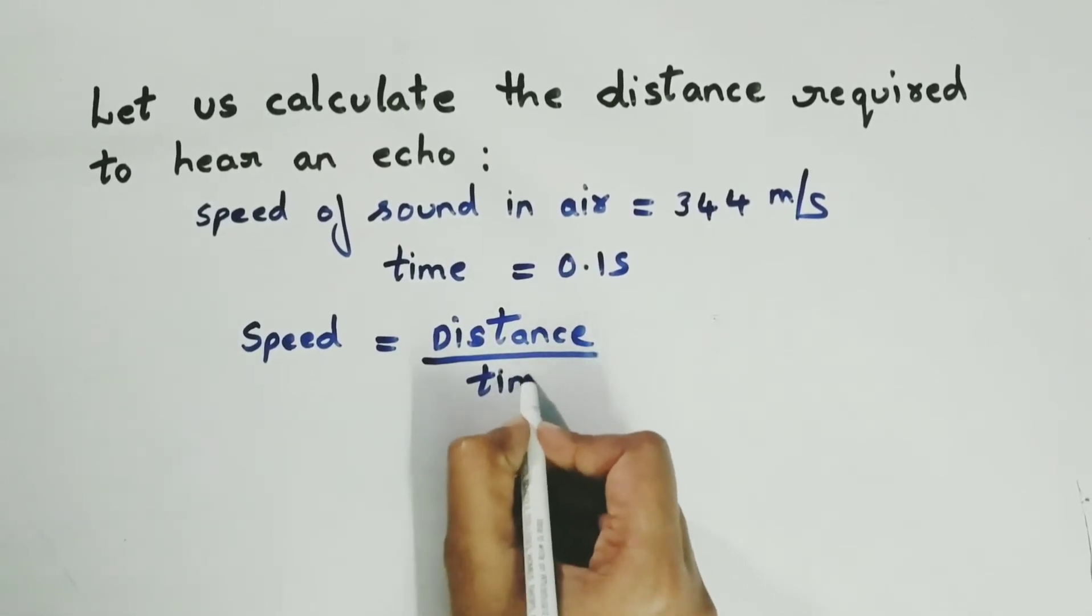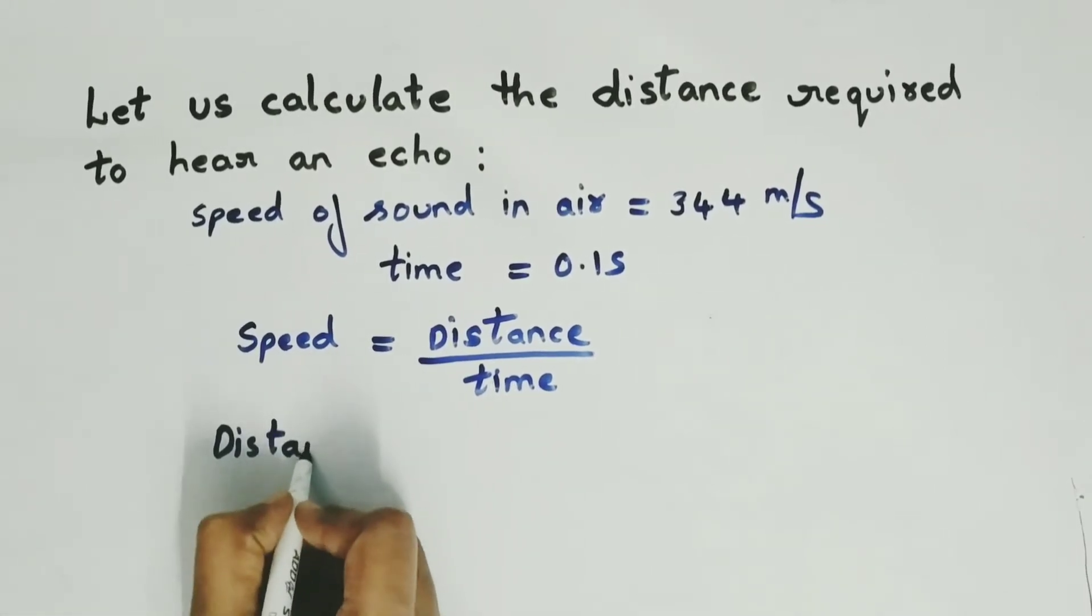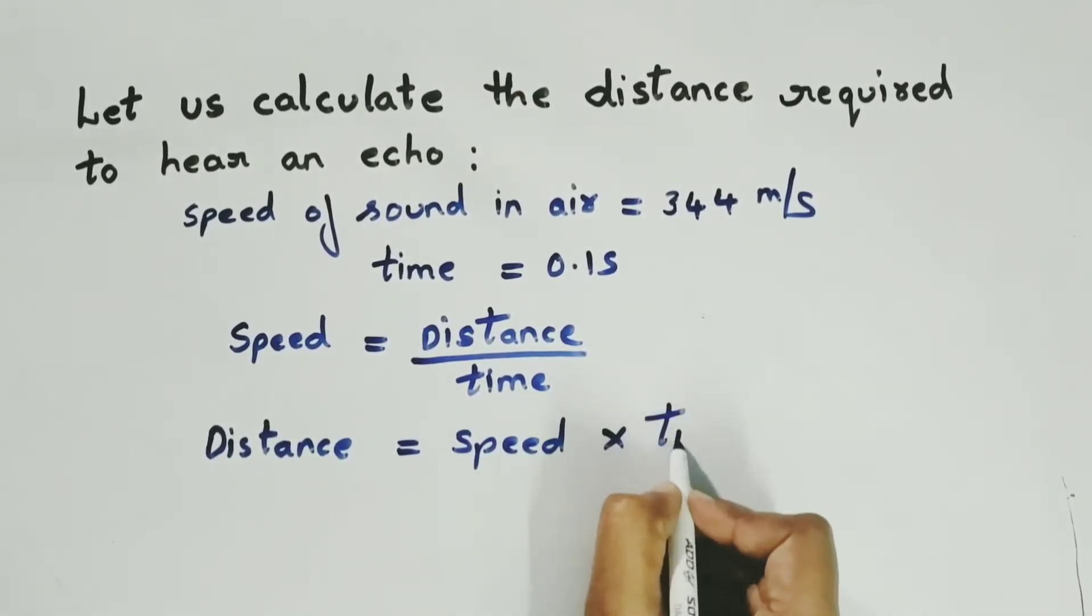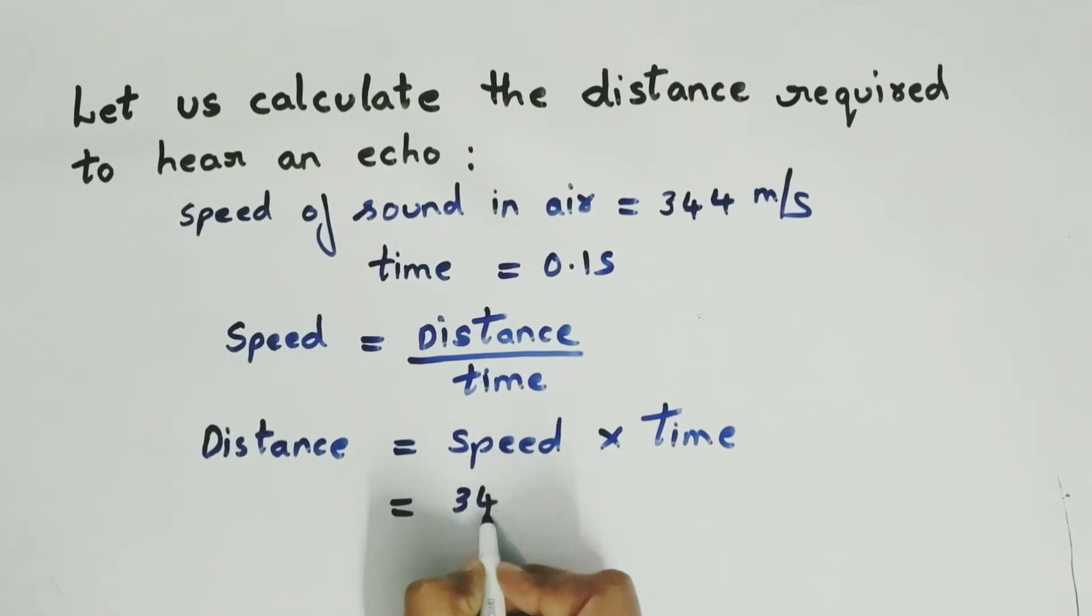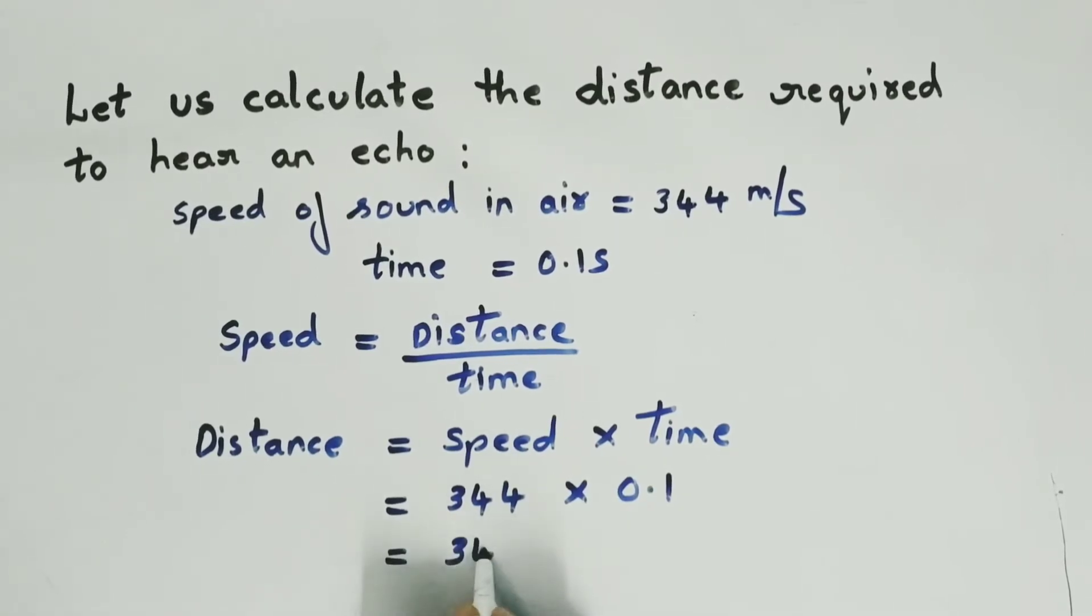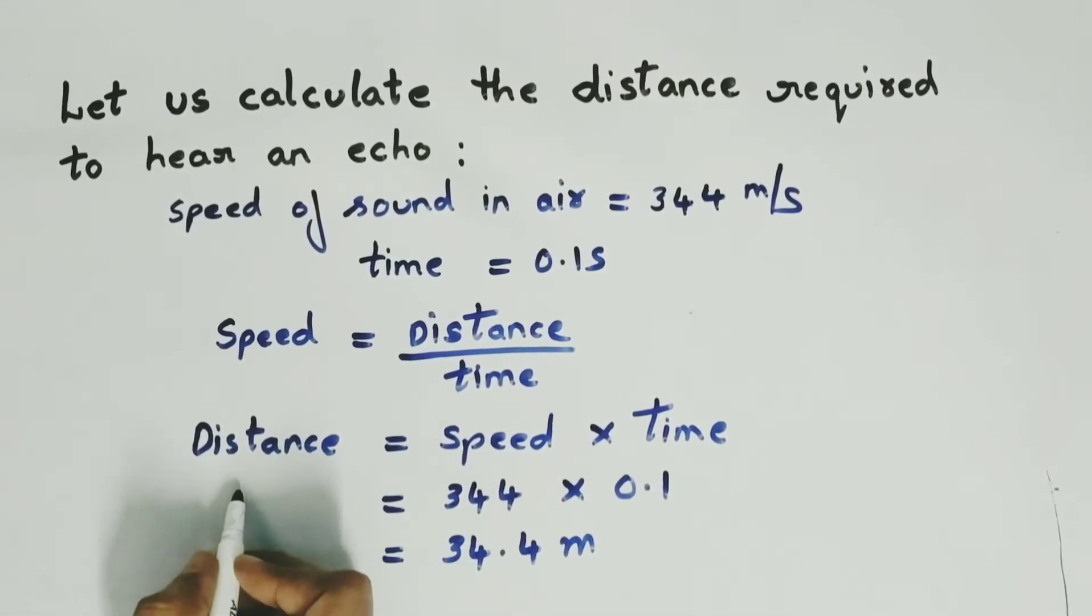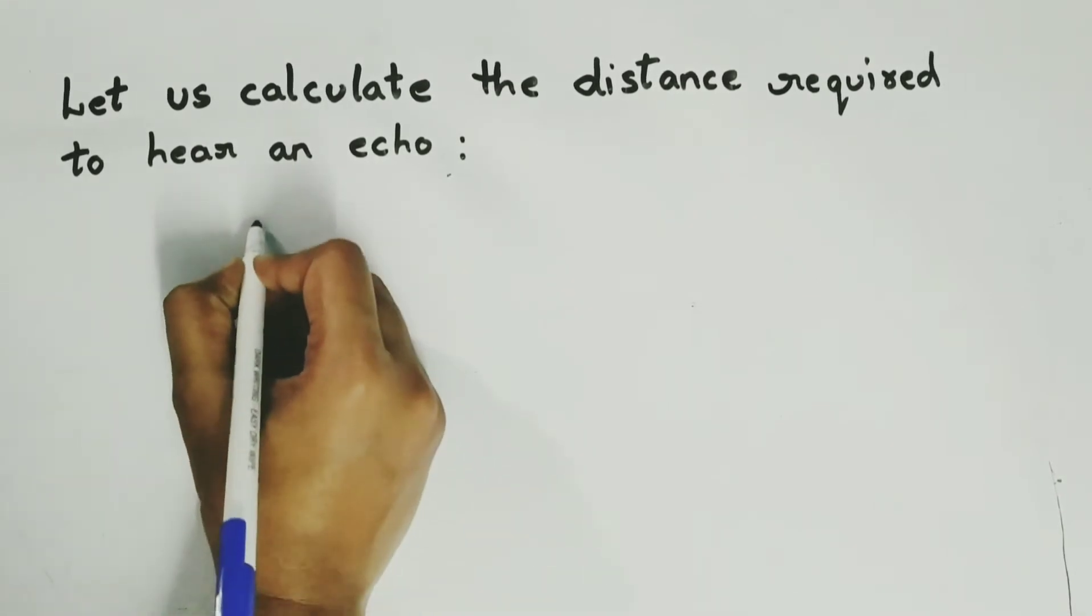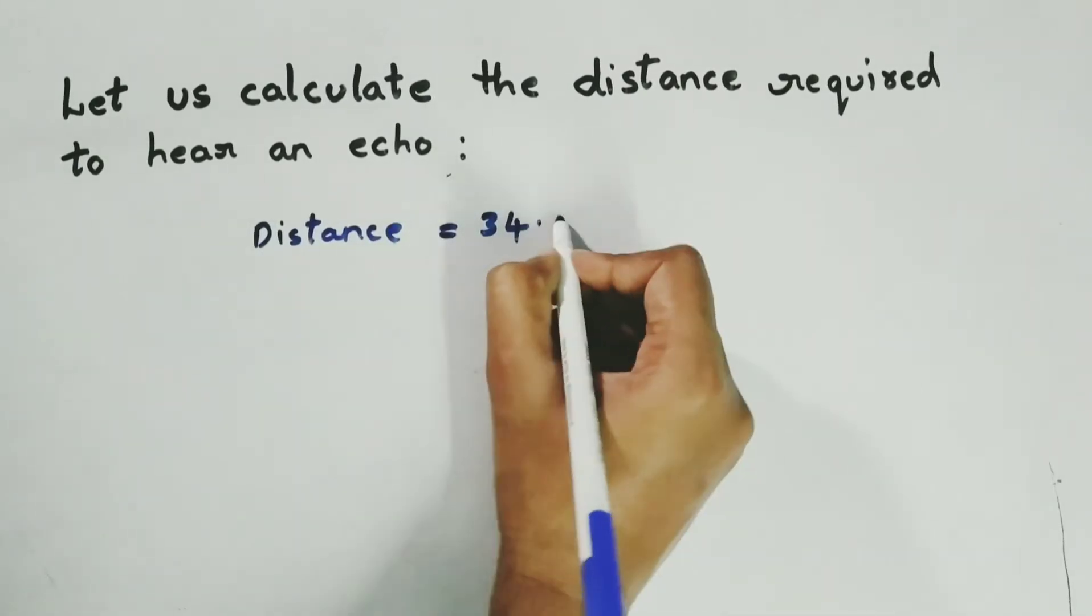Because we are calculating distance, let us deduce the distance formula and we will get distance equals speed into time. Let us substitute the values. Speed is 344 meters per second and time is 0.1 second. So we will get the answer as 34.4 meters. Why meters? Because the physical quantity is distance, so the SI unit of distance is meter.